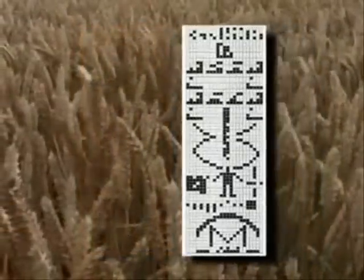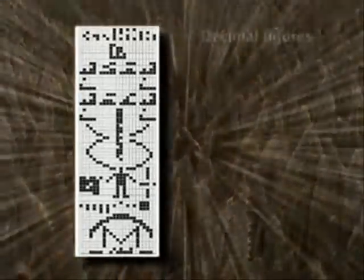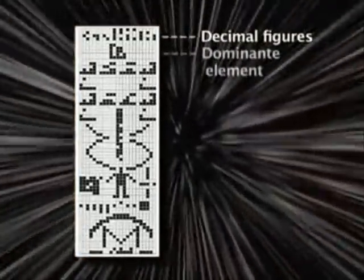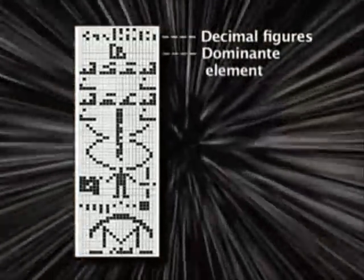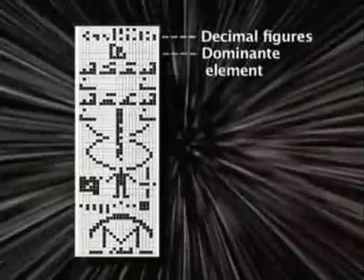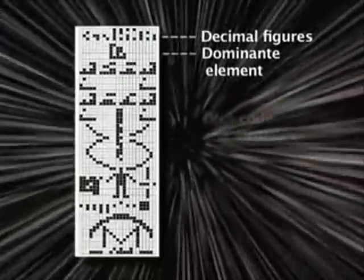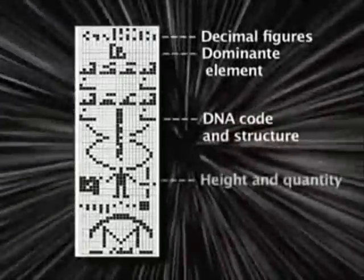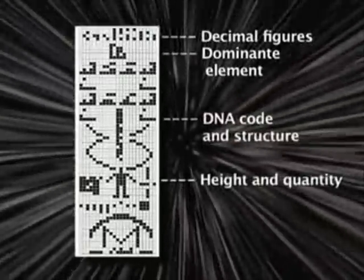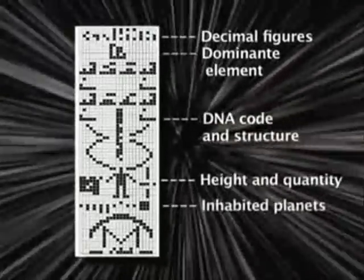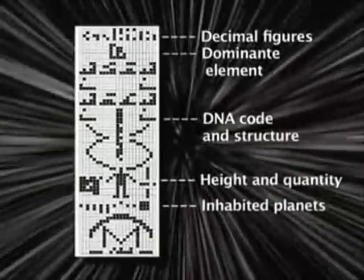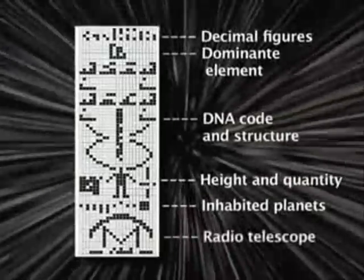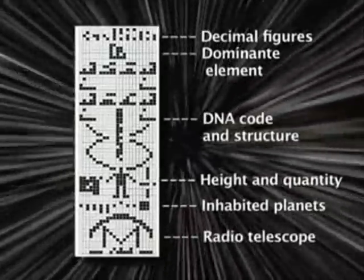Sagan's message explained our calculation system, the dominant chemical substances within the elements that create life on Earth, our DNA code, human height and quantity, that we live on the third planet in our solar system, and lastly a sketch of our radio telescope.